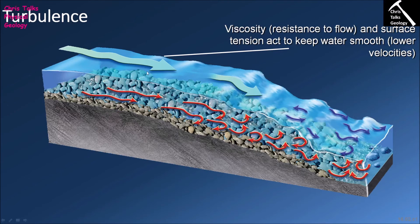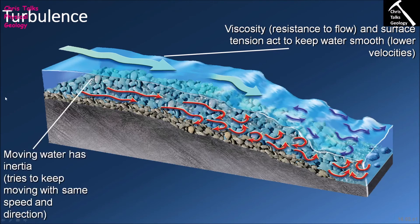Surface tension along the water's surface — the force of molecules holding themselves together — also helps keep flow along the top of the water relatively smooth. This is most easily achieved at lower velocities; as velocity increases, turbulence increases. Moving water naturally has inertia, so it tries to keep moving in the same direction. Water wants to move downhill as quickly as possible, finding the path of least resistance — either going around an obstacle, or over time eroding the obstacle away.